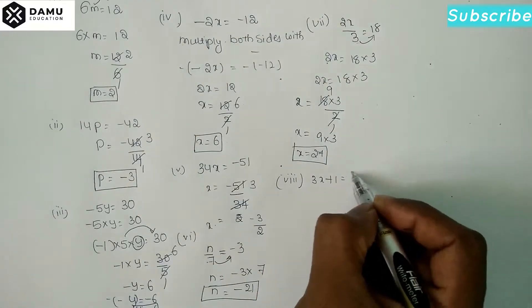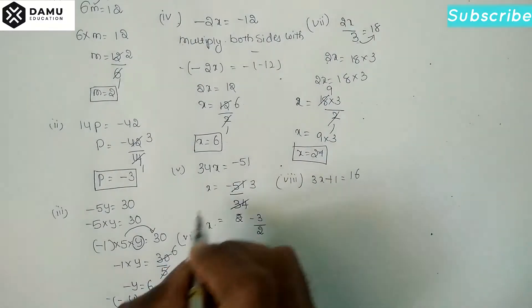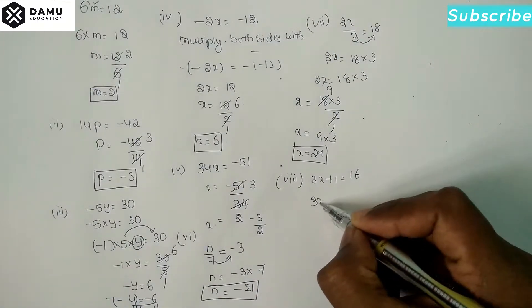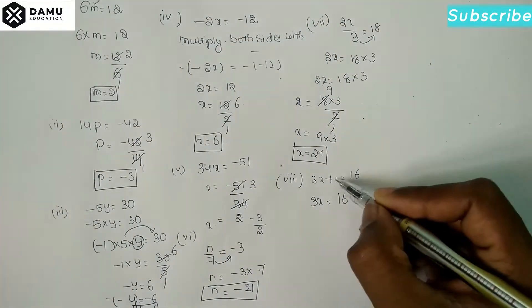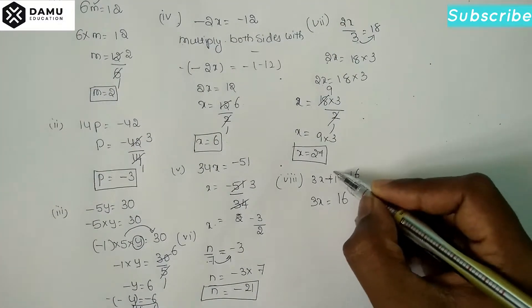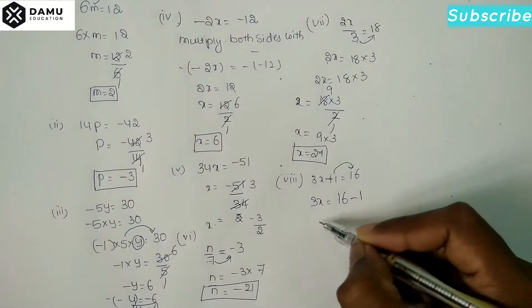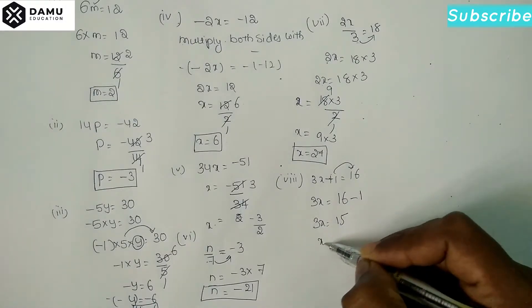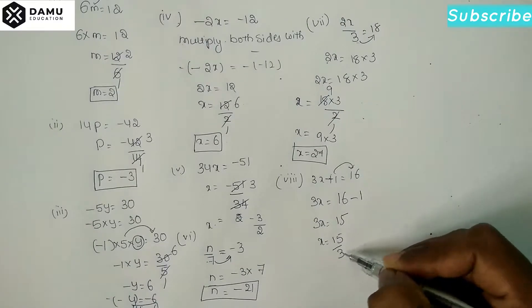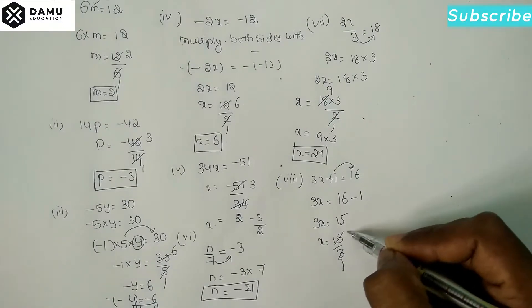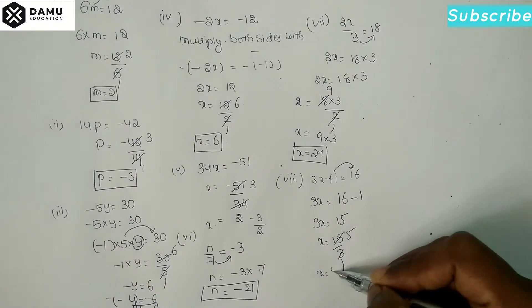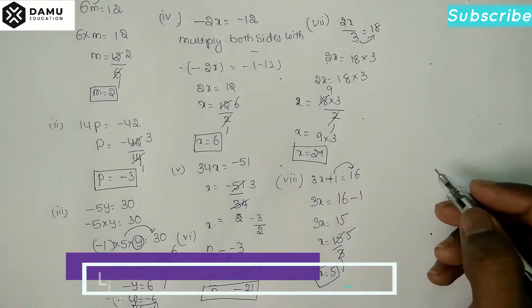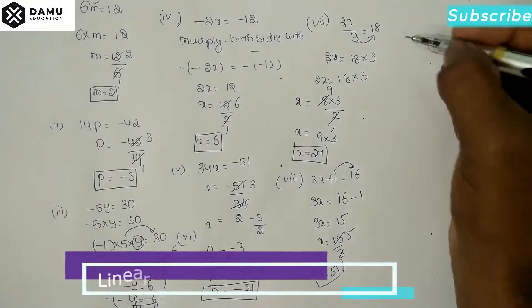The eighth one: 3x + 1 = 16. Keep 3x here; the +1 shifts to the right side and becomes -1, so 3x = 15. Then x = 15/3 = 5.